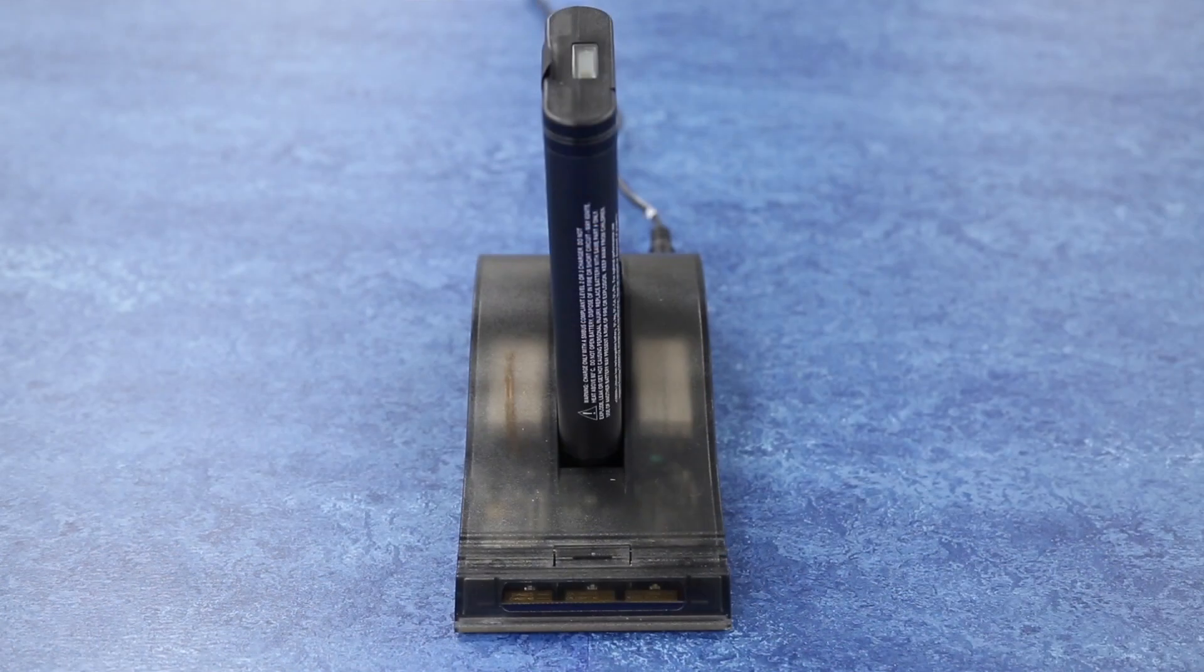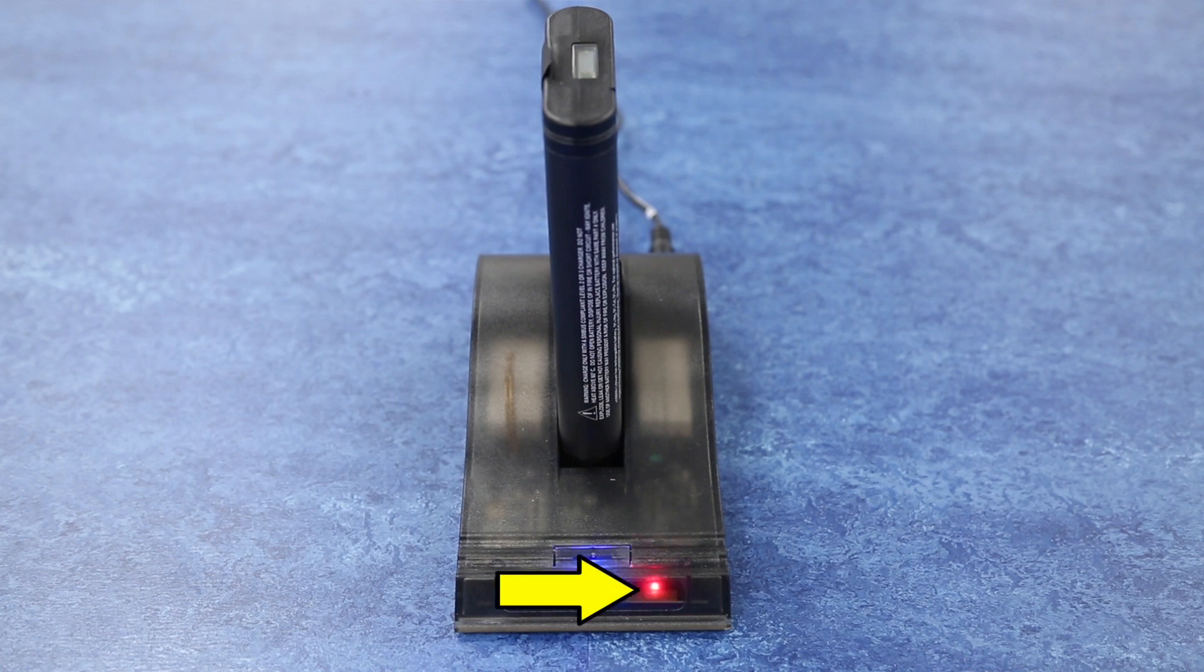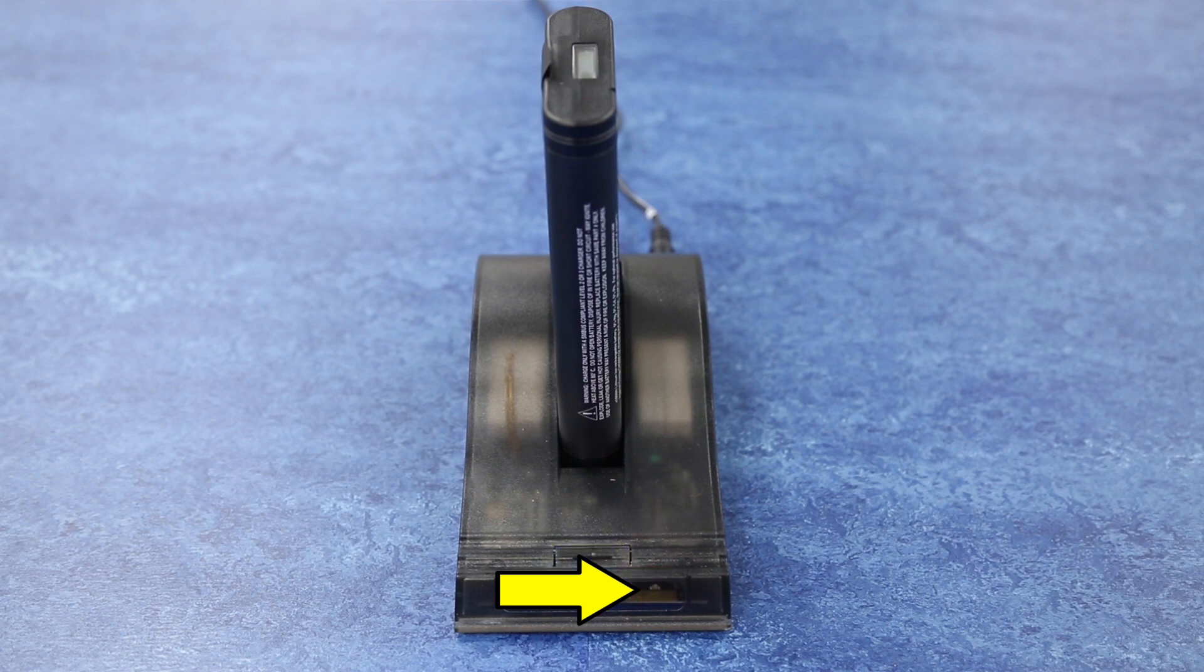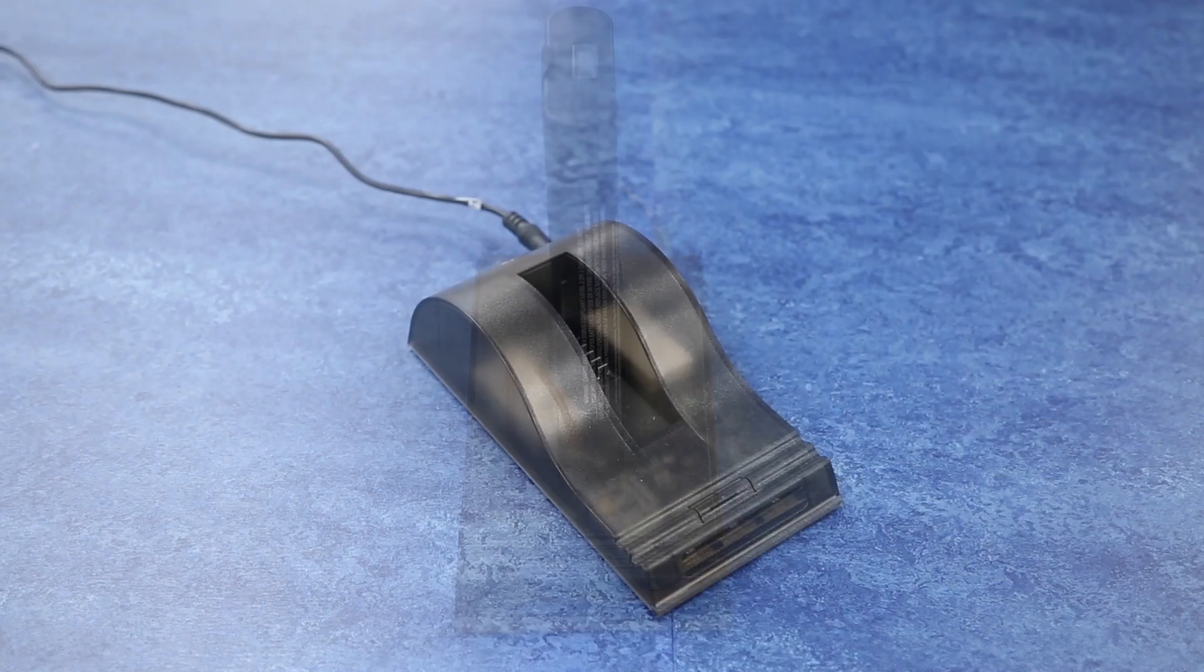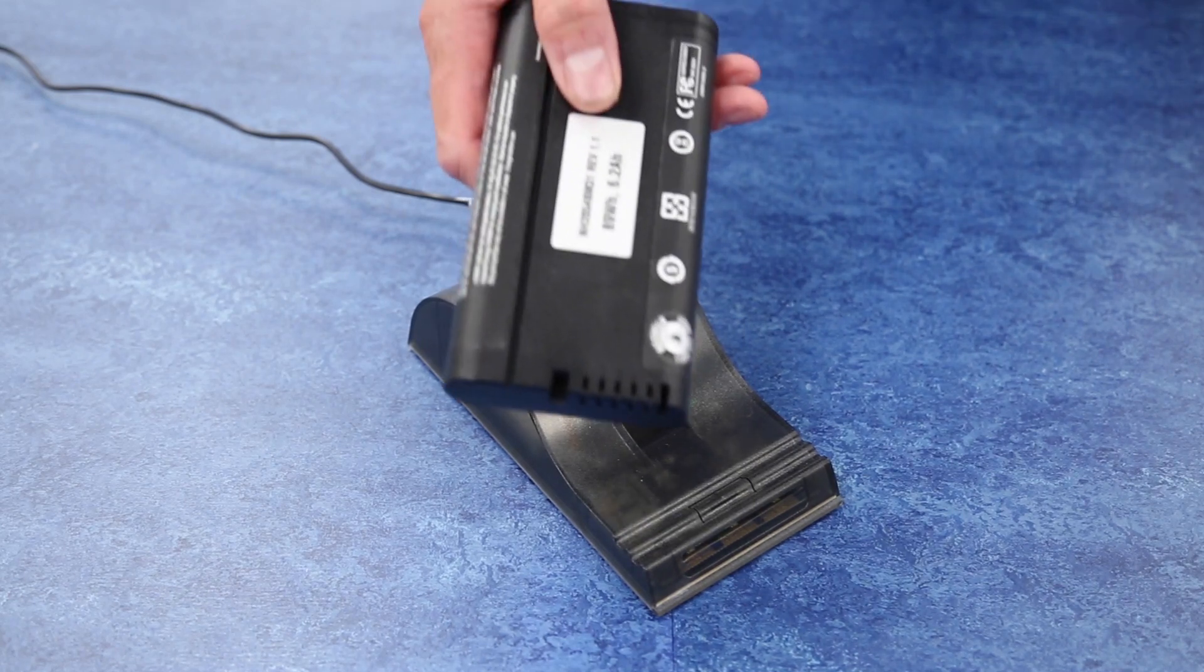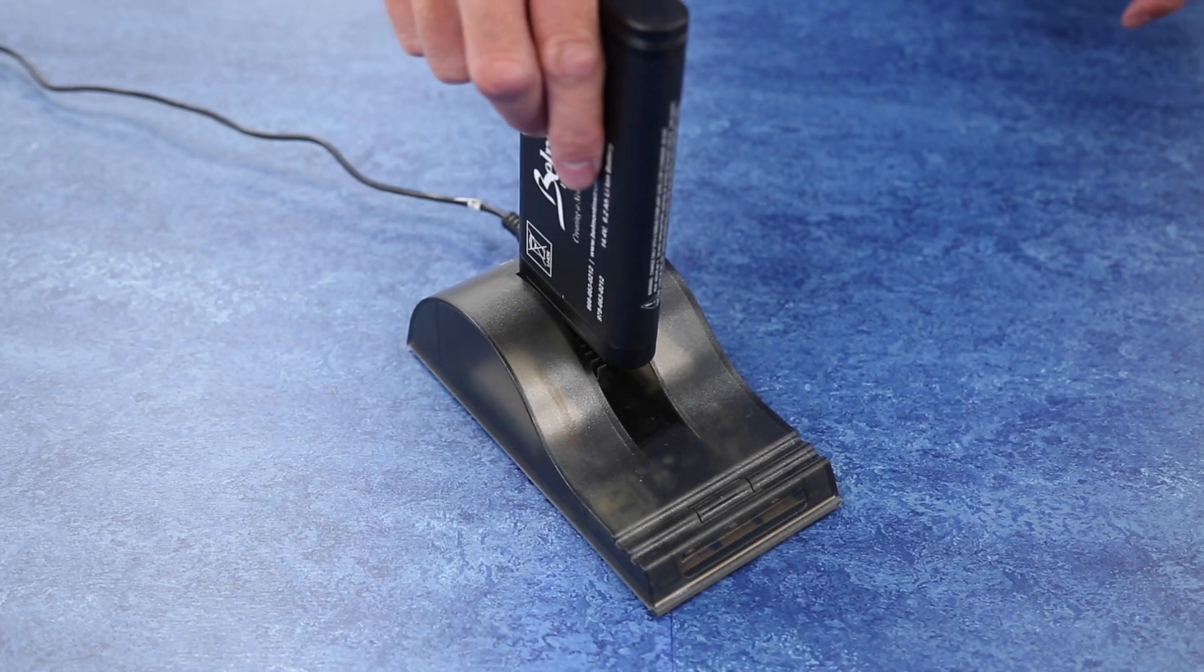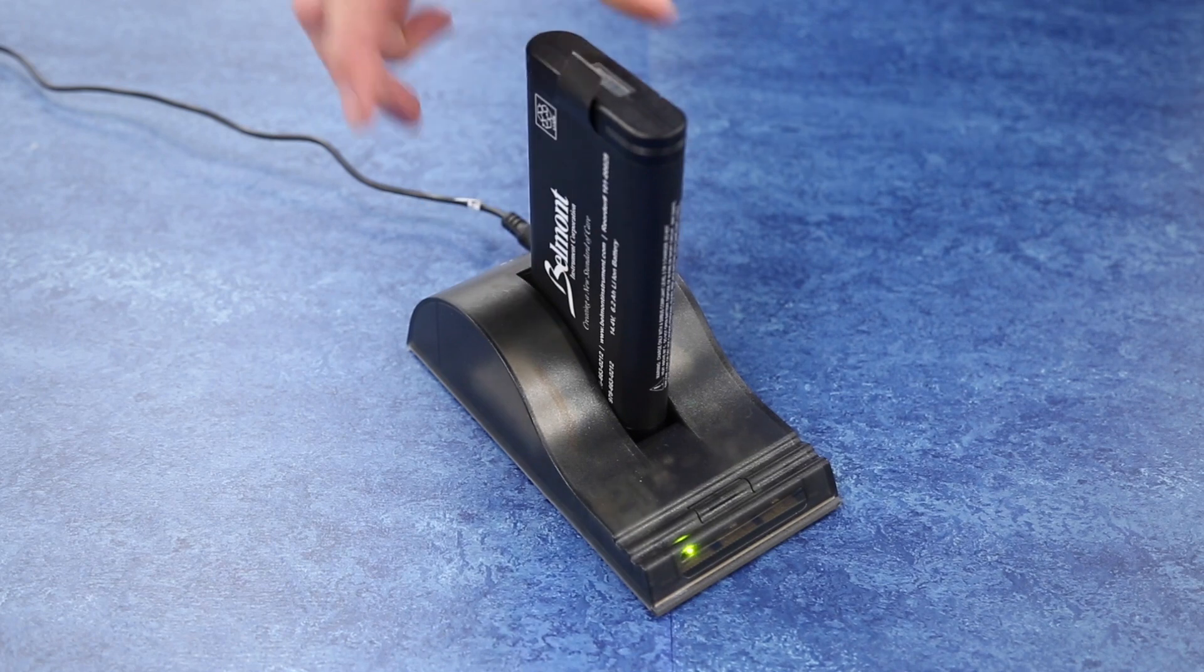When the battery fuel gauge needs to be recalibrated, the red LED indicator on the battery charger will flash. The recalibration is used to ensure the reliability of the battery capacity. To recalibrate the battery, first place the battery into the charger bay, ensuring that the 5-pin connector is fully seated.